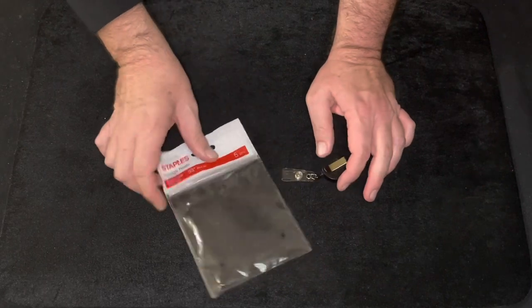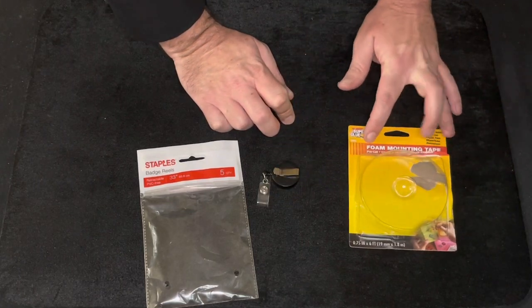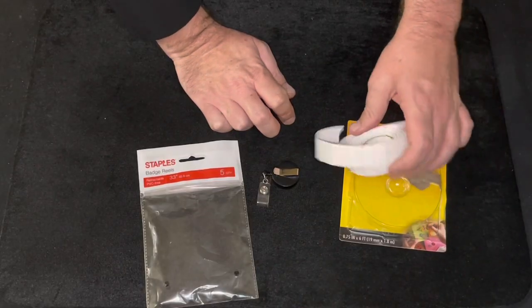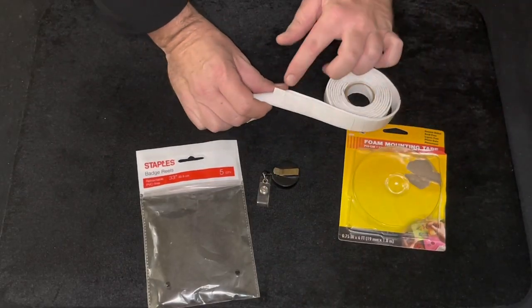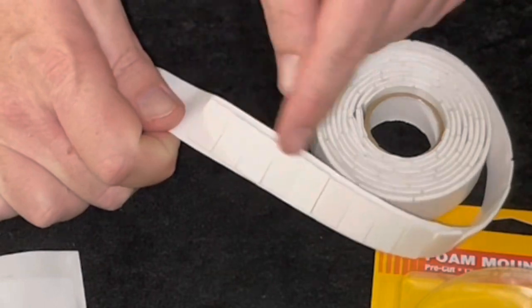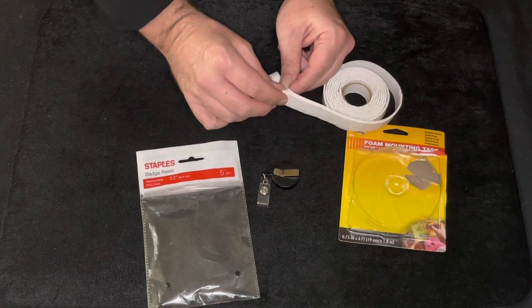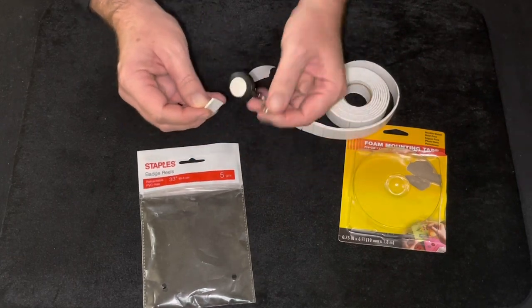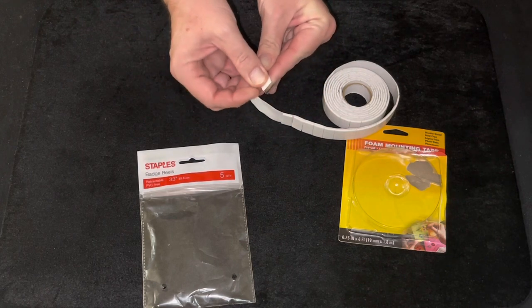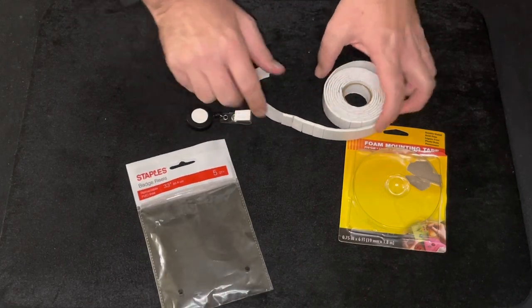And then you're going to need some double-stick foam mounting tape. I did get this at the dollar store. It's already pre-cut in little tiny sections which makes it a lot easier, but if you can't find this one that's cut in the little sections, you can always cut it with scissors. These are perfect because you just peel them off and they stick right on there. So you have a badge reel, you have double stick tape.